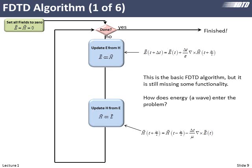Here's our first block diagram. Initially, we set all of the fields to zero. Then we enter our main finite difference time domain loop, which iterates over time. The first thing it does is look at our first update equation and update the electric field based on the magnetic field — calculating the curl of H, multiplying by the constant, and adding to the current E to get the future value. Then we update the magnetic field based on the curl of the electric field. This bounces back and forth: update E from H, update H from E, and this repeats — that is the FDTD engine.